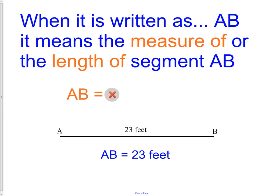Now, sometimes it is written simply as AB without this line above it. When it is written without the line segment above it, it means we are talking specifically about the measure of or the length of segment AB. So, we want to know how long is AB. That is very specific. When there is no line symbol above the top of it, we are looking for length.